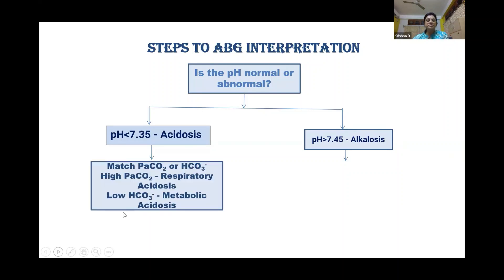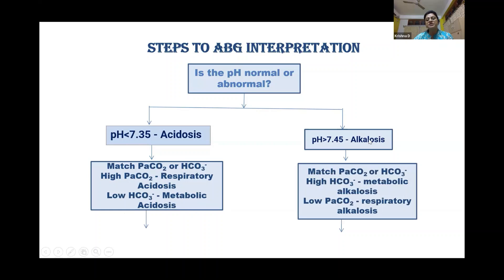Then we have to see the values of carbon dioxide and bicarbonate. If the carbon dioxide value is high, it means respiratory acidosis. And if the bicarbonate value is low, it means metabolic acidosis. Next, we check for alkalosis. If the bicarbonate value is high, it is metabolic alkalosis. And if carbon dioxide value is low, it is respiratory alkalosis.